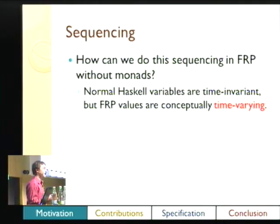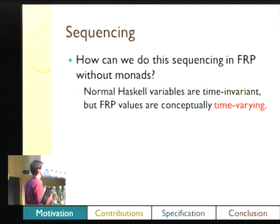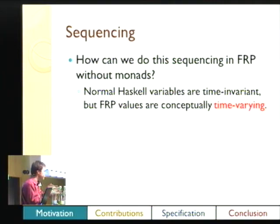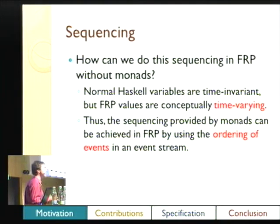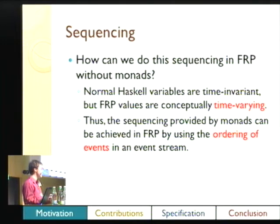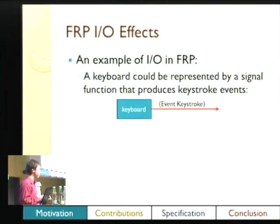In normal Haskell, variables are fixed when you make them, whereas in FRP our values are time-varying — the streams update over time. We can actually use that: we can have the same kind of sequencing that monads provide, with the ordering of events in a stream in FRP.